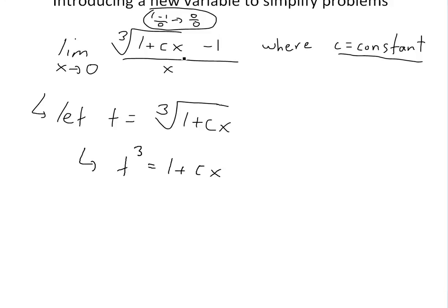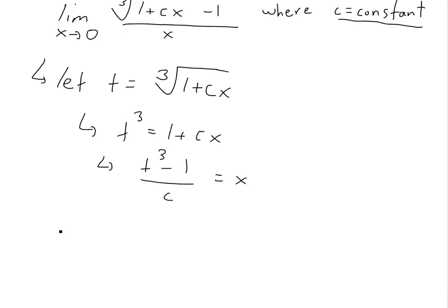We want to change everything — express the x's in terms of t. Solving for x, we get x = (t³ - 1) / c. Now, as x approaches 0, the only way this is possible is if t cubed approaches 1, or basically t approaches 1. So 1 cubed is 1, and 1 minus 1 divided by any constant c is going to be 0 — that checks out.